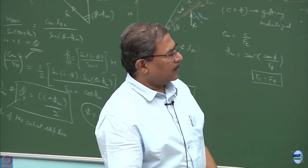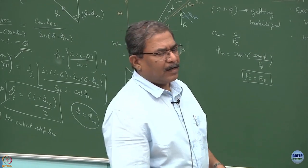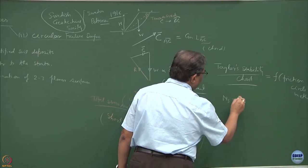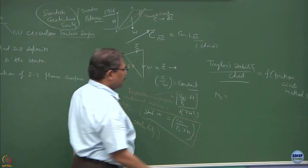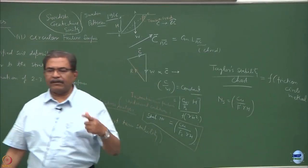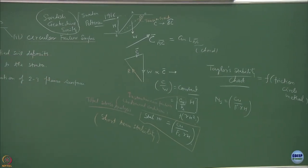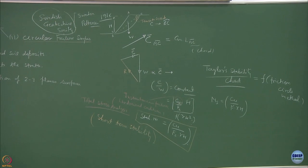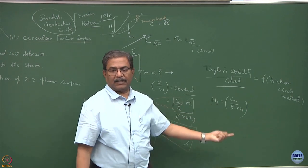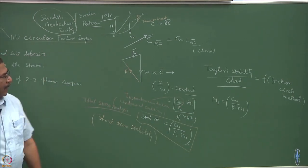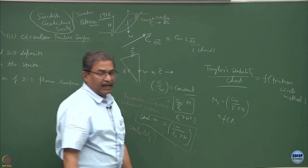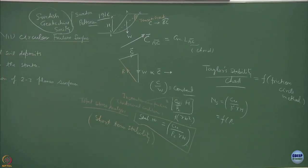By definition, the way the Taylor's chart have been defined, we use the term NS, this stability number is defined as NS and is normally written as equal to Cu over F into gamma H. It is understood that F is basically associated with the factor of safety of cohesion and we take this F as the minimum value, so the factor of safety term or stability number gets maximized. As per Taylor, this NS is a function of the slope angle beta and the phi u value.